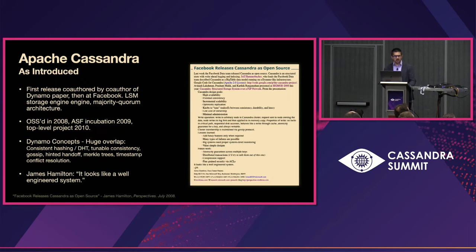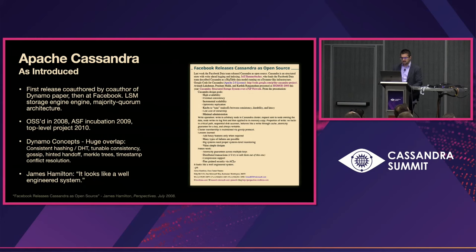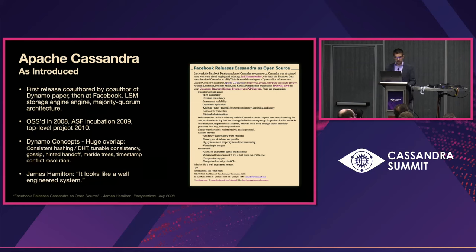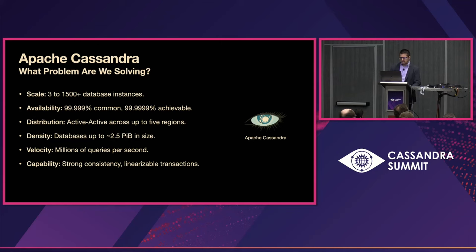And this is where Apache Cassandra comes in. Cassandra was co-authored at Facebook by an original author of the Dynamo paper at Amazon. It took many aspects of the Dynamo design like data placement via consistent hashing, tunable consistency, gossip, hinted handoff, Merkle trees, and timestamp-based conflict resolution. Cassandra added features not originally included in the Dynamo paper, like rich data types and an LSM storage engine. But it sure had a lot of growing up to do. Dynamo's tight framing of its own problem statement was critical to its success, but what problem space do Dynamo-derived systems like Apache Cassandra try to succeed in today?